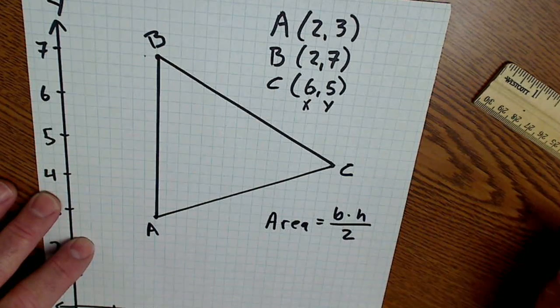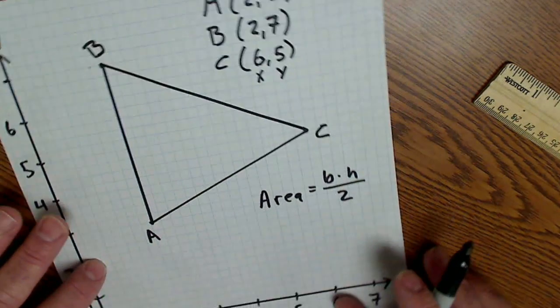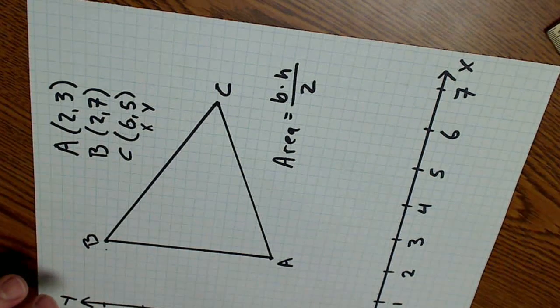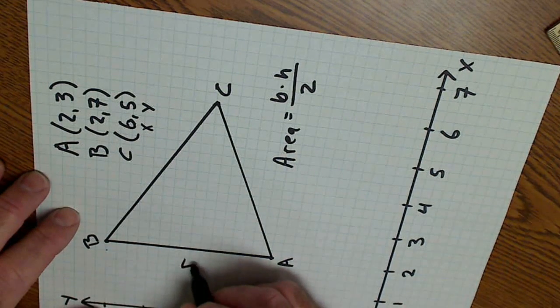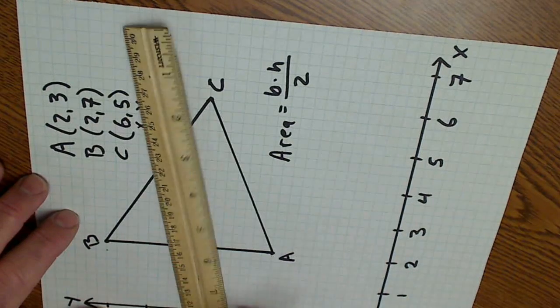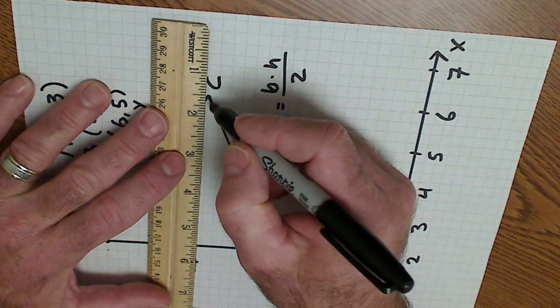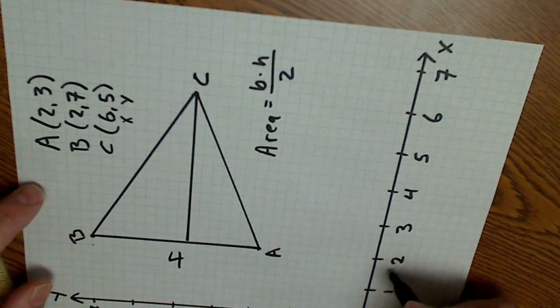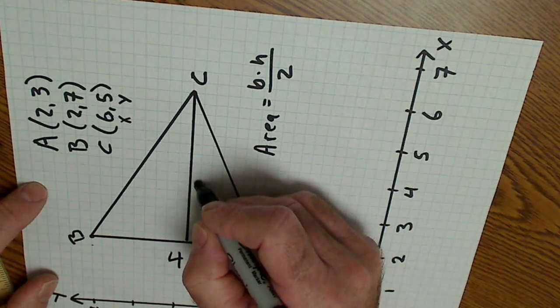So let me try and find a horizontal base. I'm actually going to turn this around so that this is my base. So it goes from 3 to 7. My base is 4 units long. So my altitude, which is perpendicular to my base, goes from 2 to 6, also 4 units long.